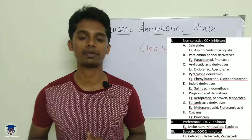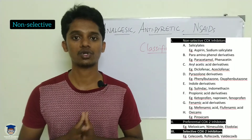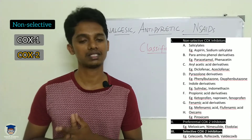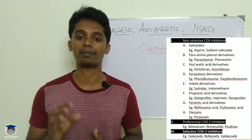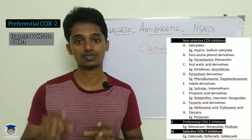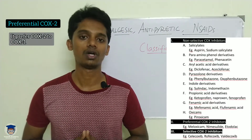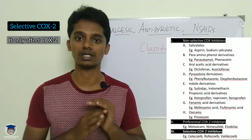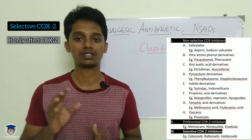The first classification is non-selective COX inhibitors. There are two types of COX enzymes: COX-1 and COX-2. Non-selective inhibitors inhibit both COX-1 and COX-2. The second is preferential COX-2 inhibitors — they prefer COX-2 but also affect COX-1. The third is selective COX-2 inhibitors, which directly and selectively inhibit COX-2 without significantly affecting COX-1.